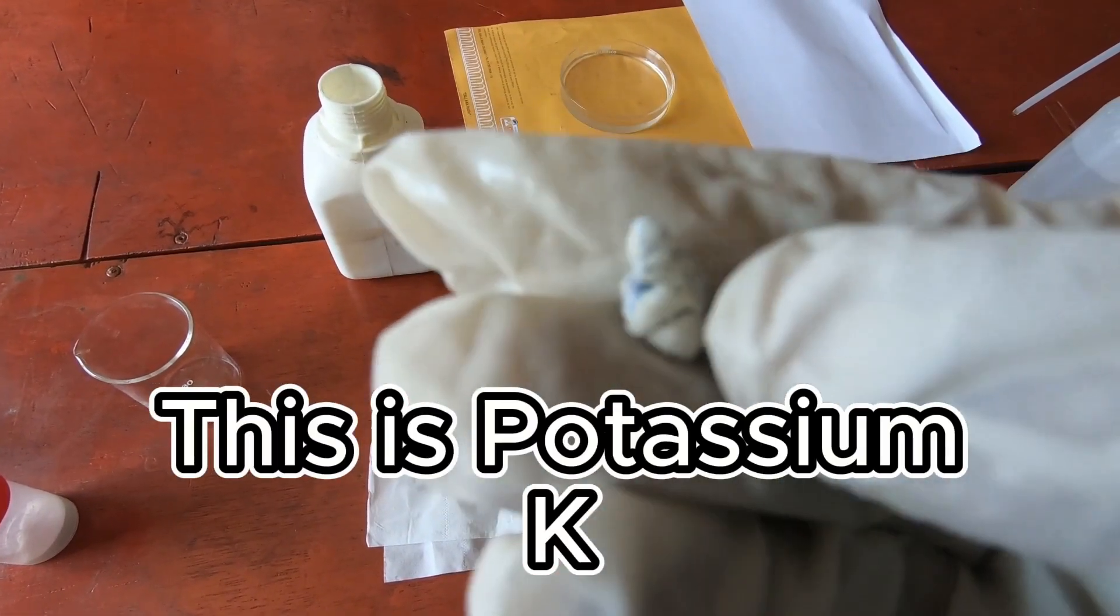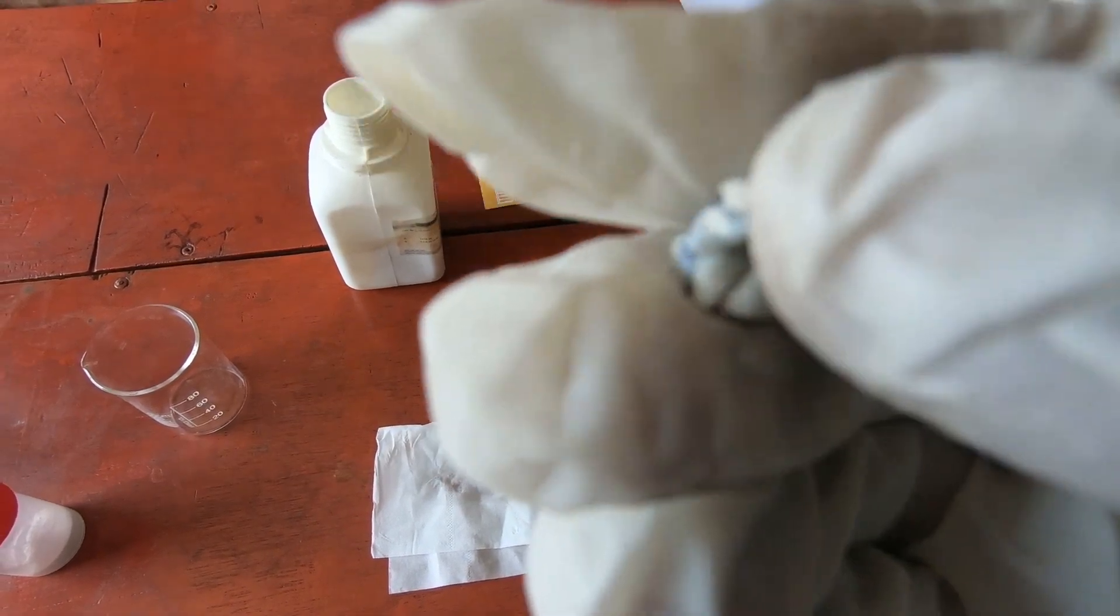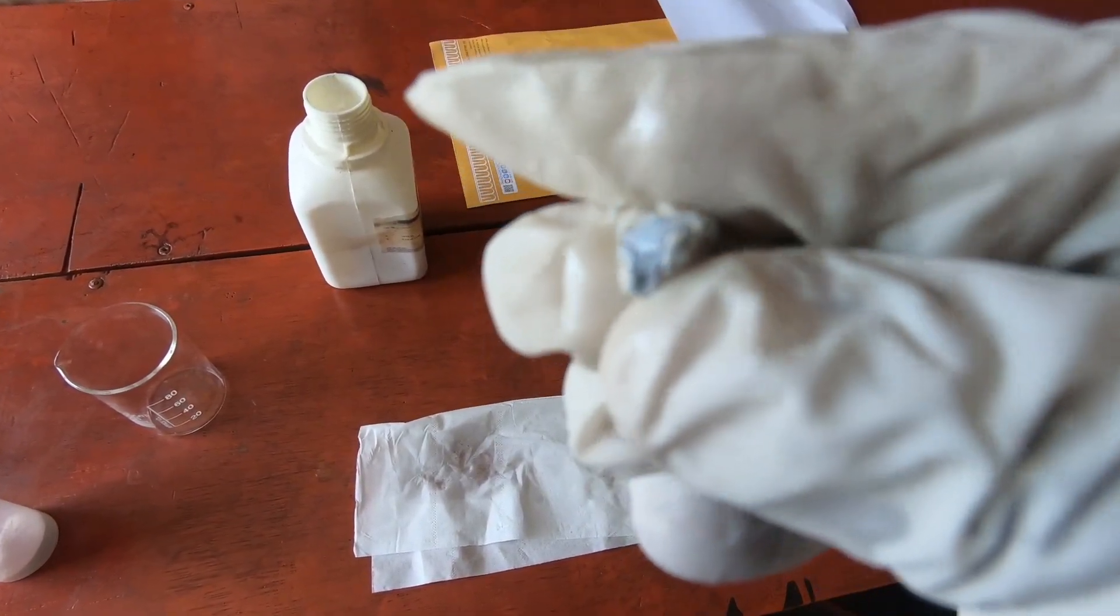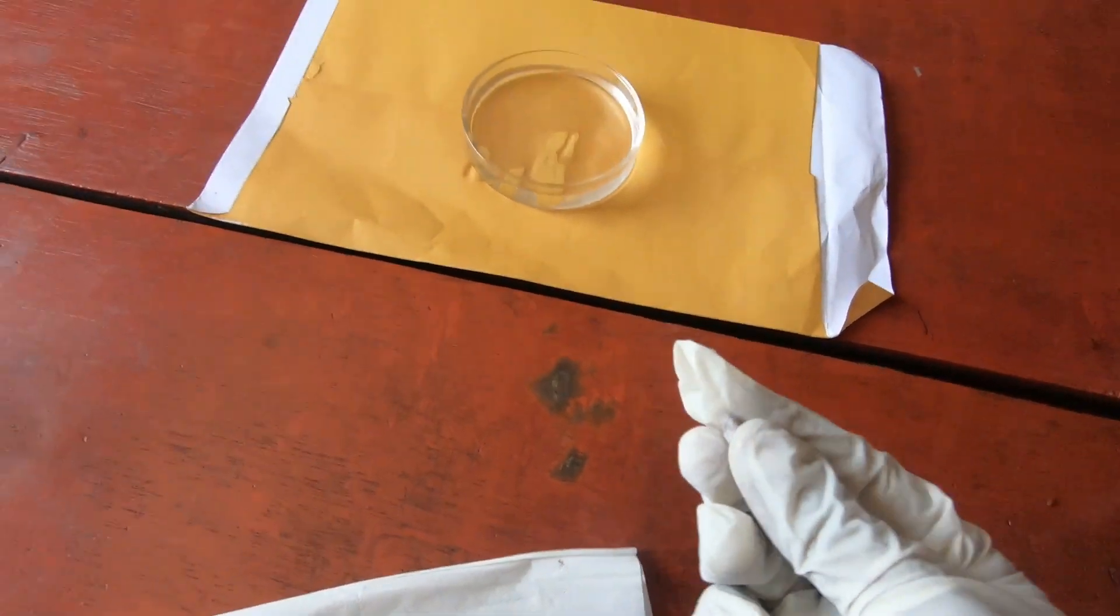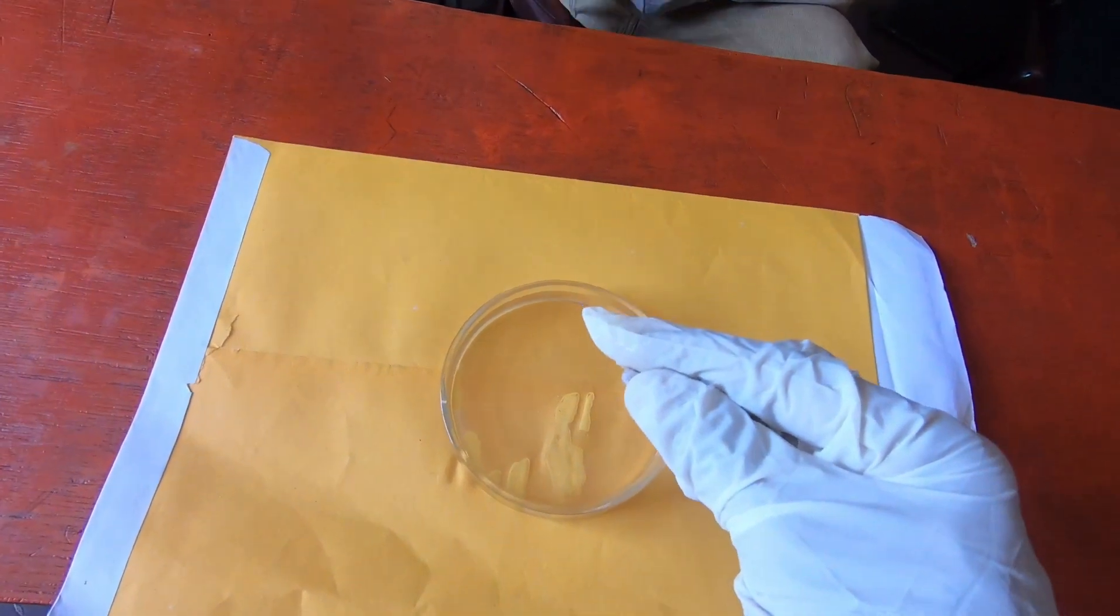Both sodium and potassium are very soft metals. We can easily cut them using a knife. Here I have used a scissor to cut them. The reactivity increases down the group and we know that the softness increases down the group as well.